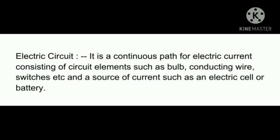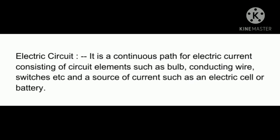An electric circuit is a continuous path for electric current consisting of circuit elements such as bulb, conducting wire, switches, and a source of current such as an electric cell or battery. Circuit elements are the components such as bulbs, wires, cells, and switches.